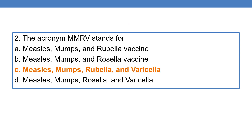Next question: the acronym MM-RV stands for. This is a vaccine. MM-RV stands for measles, mumps, rubella, and varicella. Option C is the correct answer.